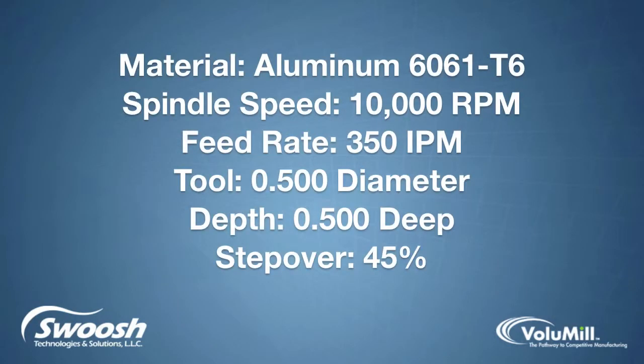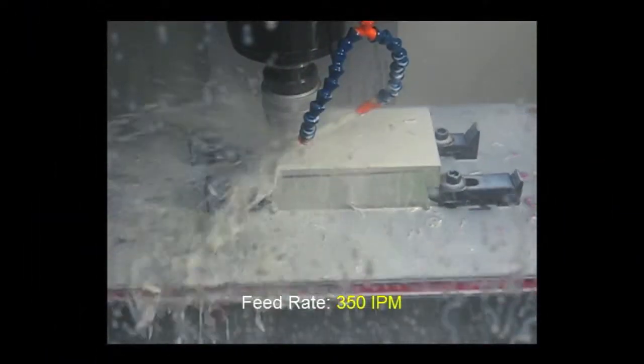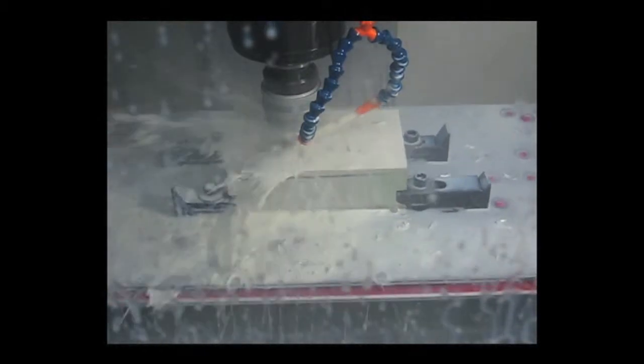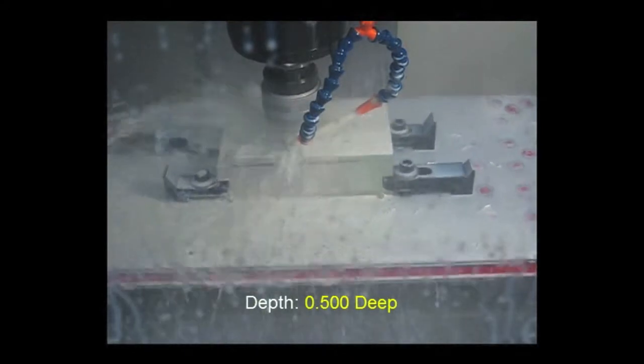Volume Hill turns this light-duty Haas Super Mini with low horsepower and torque and a 10,000 rpm spindle into a high-speed milling machine by cutting 6061-T6 aluminum a half inch deep with a 45% stepover at 350 inches per minute with one-fourth the tool wear.